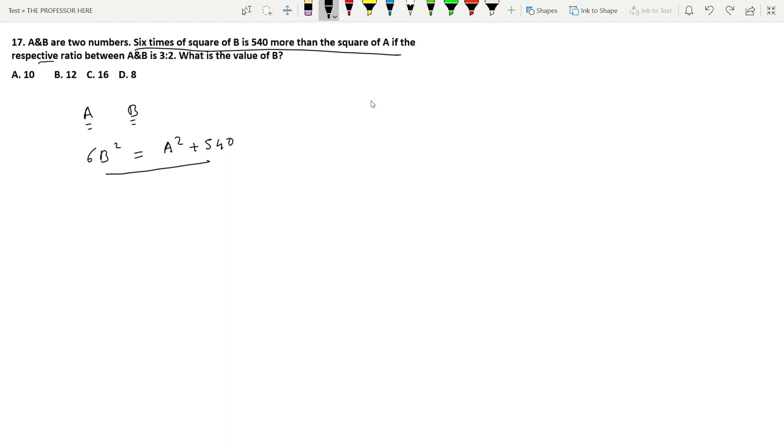Now we look at the second part of the question where the respective ratio between a and b is 3 is to 2. So let's assume that the two numbers a and b are 3x and 2x because the ratio is 3:2.